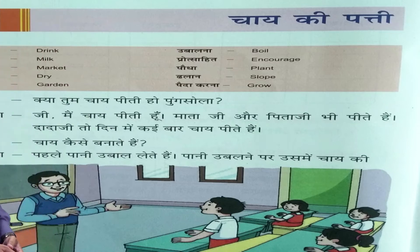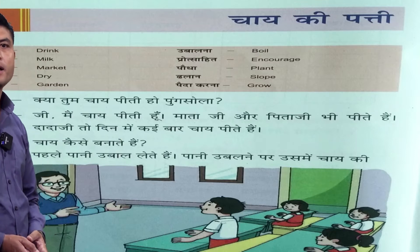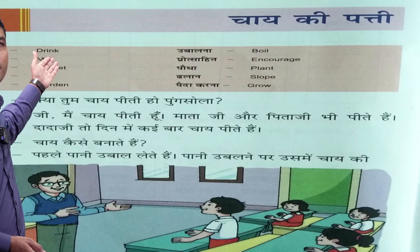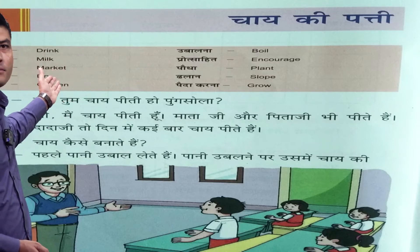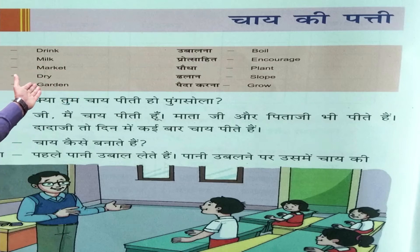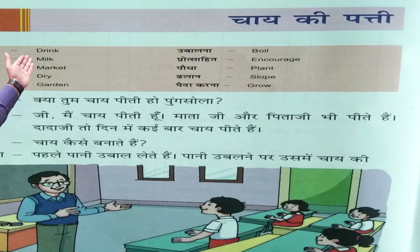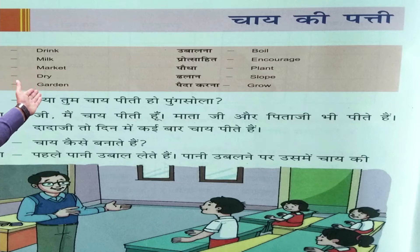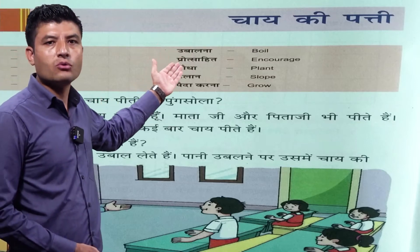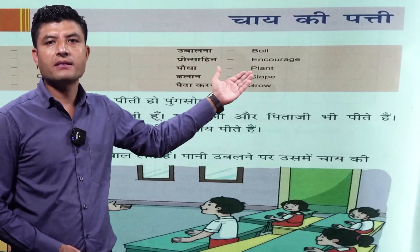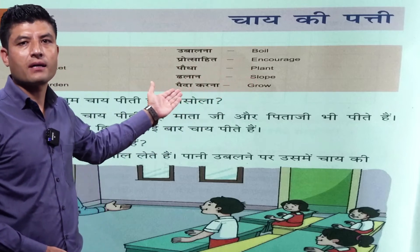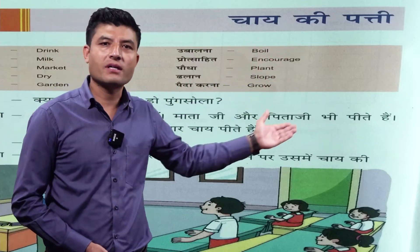Sabse pehle padhenge vocabulary words: Peena means drink. Doodh means milk. Baazaar means market. Sukha means dry. Baag/bagan means garden. Ubaalna means boil. Prachahit means encourage. Paudha means plant. Dhalaan means slope. Paida karna means grow. So we have: peena-drink, doodh-milk, baazaar-market, sukha-dry, bagan-garden, ubaalna-boil, paudha-plant, dhalaan-slope.